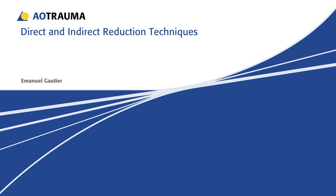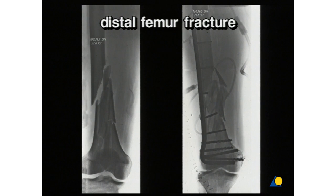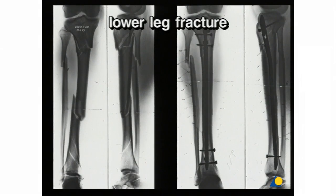We differentiate between direct and indirect reduction techniques. With the direct technique, the fracture is exposed, the reduction instruments remain visible when inserted into or near the fracture zone, and the result of the reduction can be examined visually.